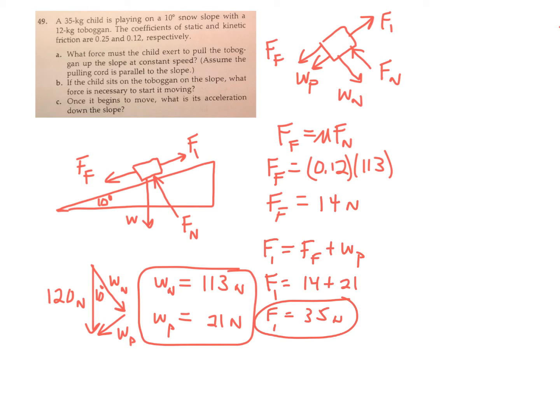All right. Now, once the child jumps on, sits on this toboggan, hopefully it starts to slide down the ramp. It's the same basic, somewhat the same. There's no more force up the ramp once they jump on. Let me redraw the diagram. So it actually has changed a fair amount.